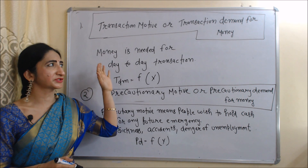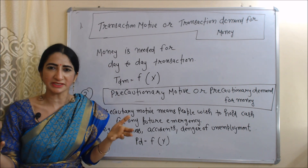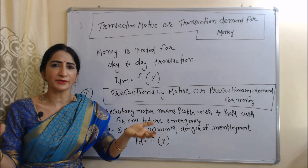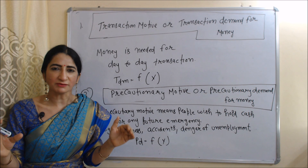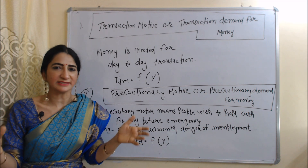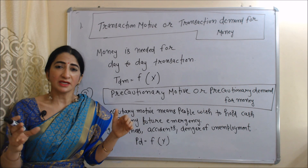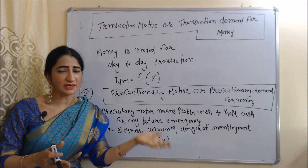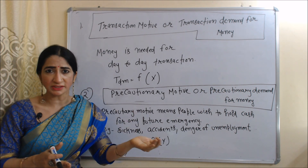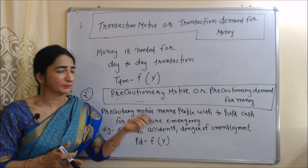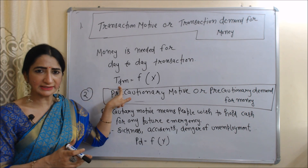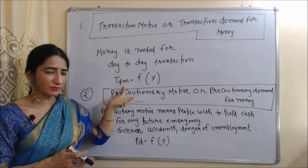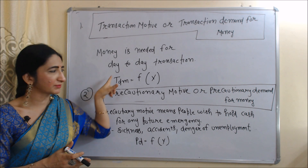First, we are going to talk about transaction motive, or transaction demand for money. Transaction demand for money means money that is required for day-to-day transactions. Income and transaction demand for money have a direct relation: if income increases, transaction demand for money will also increase; if income falls, transaction demand for money will also fall. In the equation, TDM is transaction demand for money, Y is income — TDM is a function of income.